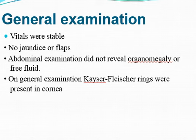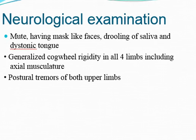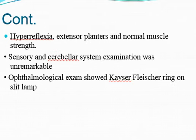On examination, the child is vitally stable, no jaundice. Abdominal examination did not reveal any organomegaly or free fluid. KF ring is present in the cornea. Neurological examination shows mute patient with mask-like facies, drooling of saliva, and dystonic tongue. There is generalized cogwheel rigidity in all four limbs including the axial musculature. There are postural tremors of both upper limbs. Hyperreflexia with extensor plantars, with normal muscle strength; sensory and cerebellar system examination was unremarkable. Ophthalmological examination confirms KF ring on slit lamp examination.